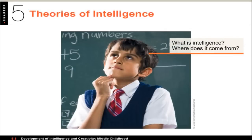The first thing we want to look at is theories of intelligence. Intelligence has been a major field in psychology for a long, long time. Most of the people who deal with the measurement of intelligence are called psychometricians. One of the biggest people in this field was David Weschler, who defined intelligence as the capacity to understand the world and the resourcefulness to cope with its challenges.